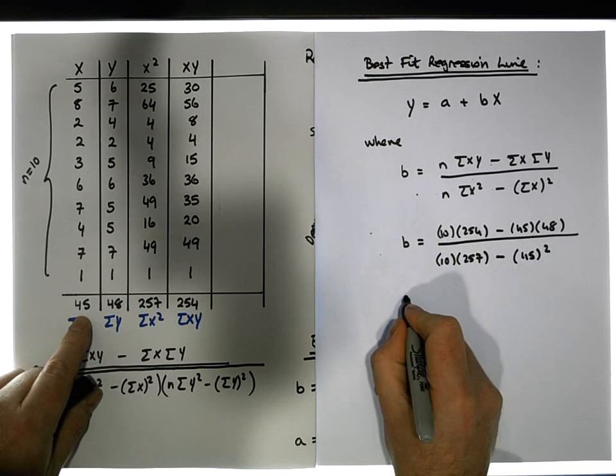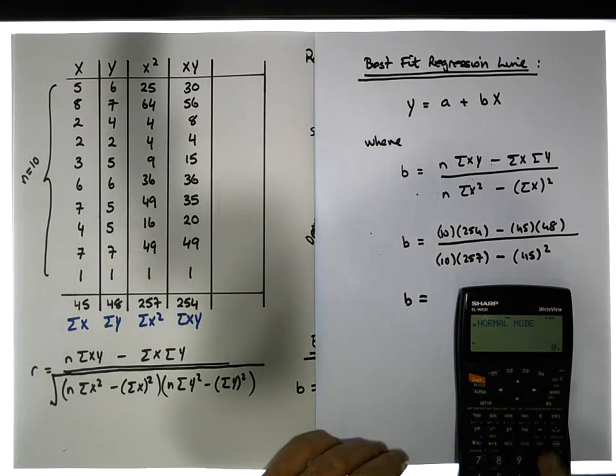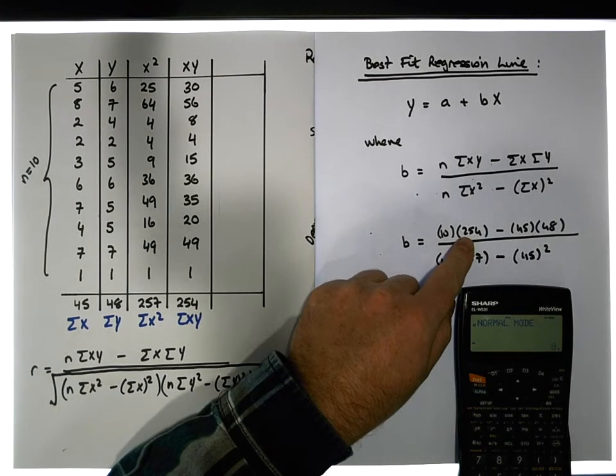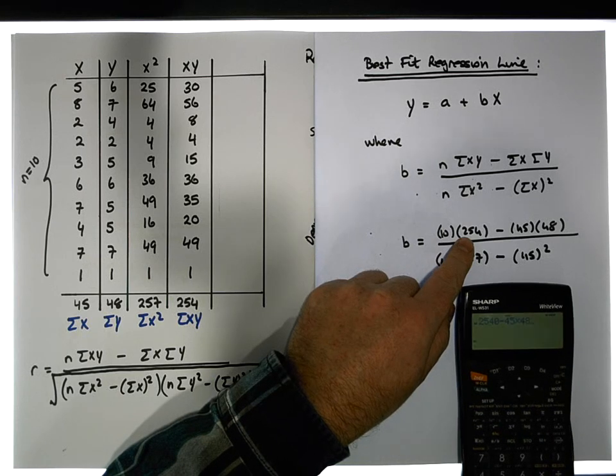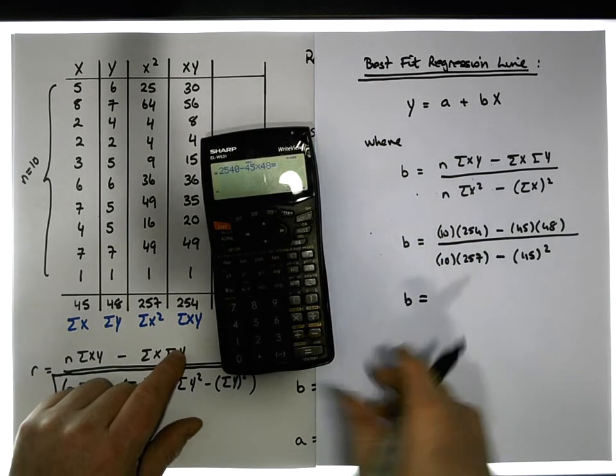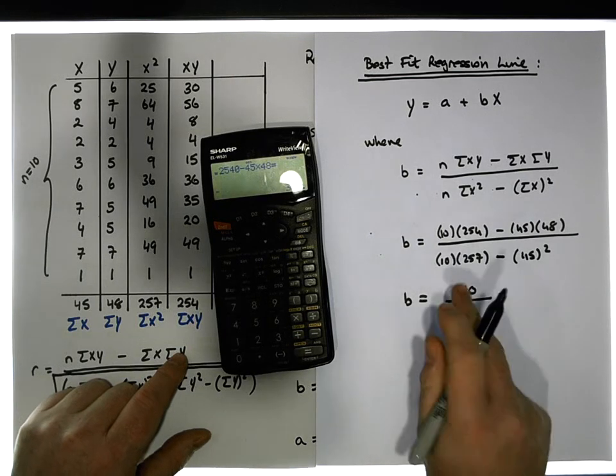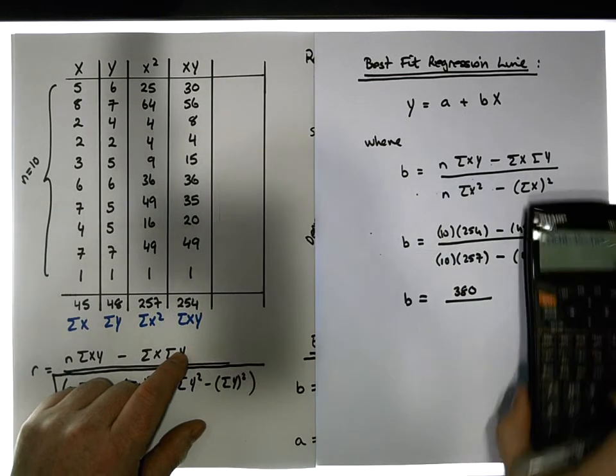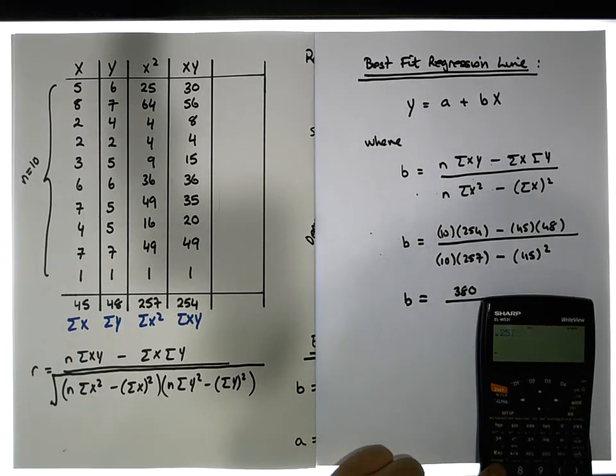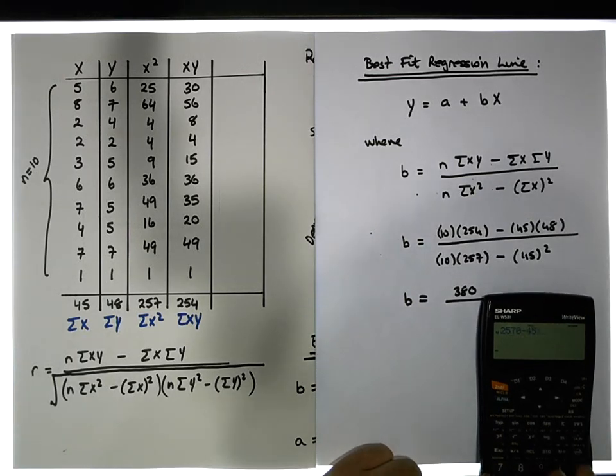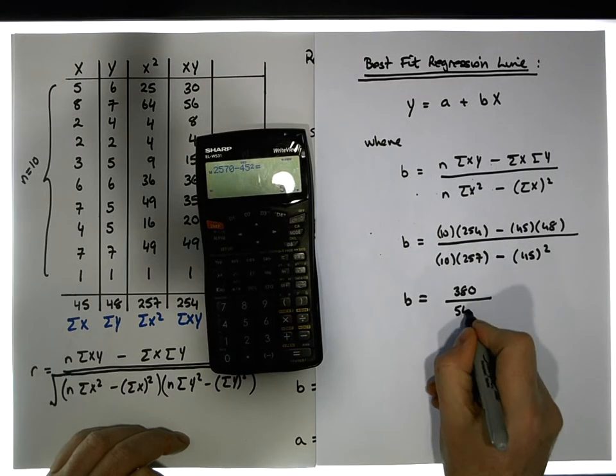So using our calculator here our b value is going to be equal to, let me just do that here, it's 10 times 254 is 2540 minus 45 times 48 gives us a numerator of 380. That needs to be divided by 10 times 257 minus 45 squared, so it's 2570 minus 45 squared gives us a value of 545.